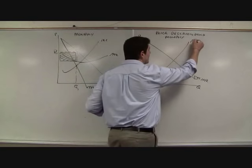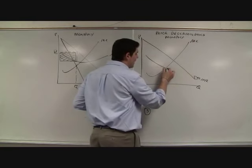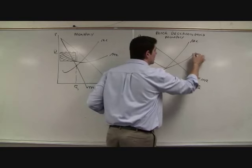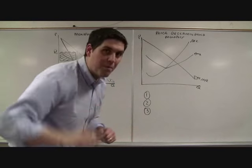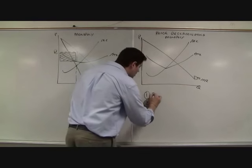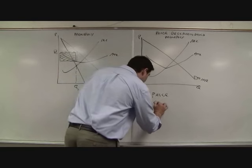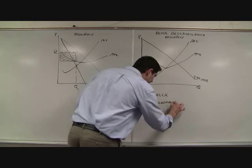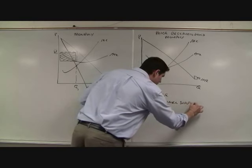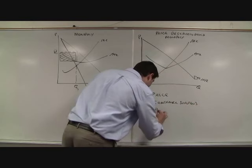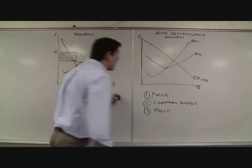Well marginal cost looks the same. It always does. And I'm going to draw an ATC. ATC looks like this. I have three questions for you. Pay attention. Here they are. I want you to tell me where is the price. I want you to tell me where is consumer surplus. And then I want you to tell me where is profit, just by looking at this graph.